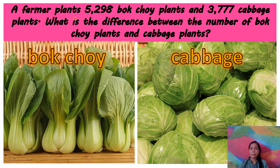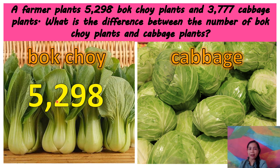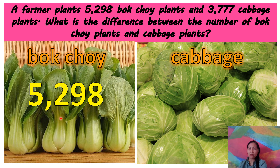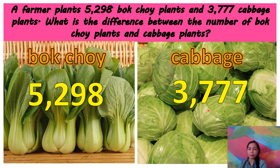This is an example of a word problem in subtraction. Let's read: A farmer plants 5,298 bok choy plants and 3,777 cabbage plants. What is the difference between the number of bok choy plants and cabbage plants? There are 5,298 bok choy plants and 3,777 cabbage plants.